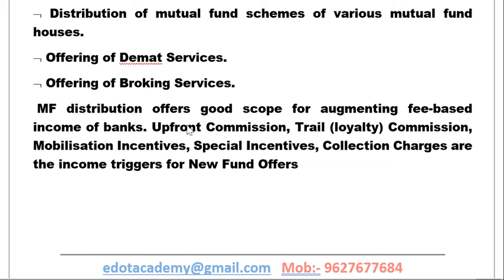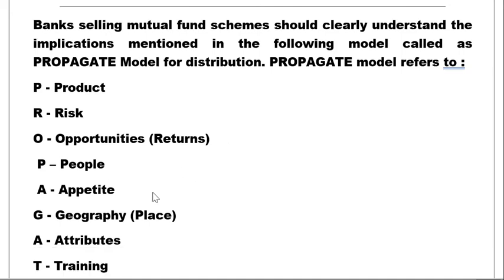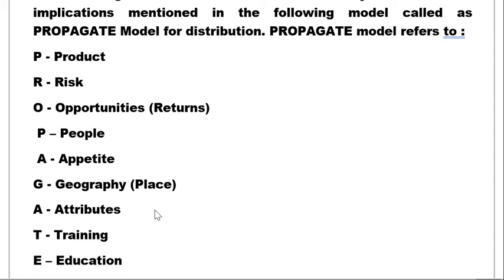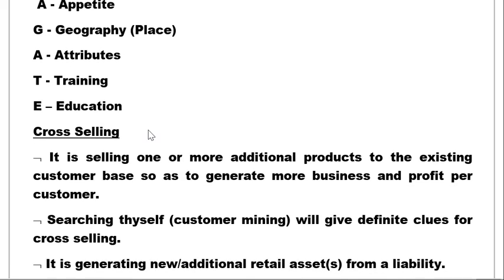Mutual fund distribution is offering very good income for banks, including during new fund offerings. When banks sell mutual fund schemes to customers, they should understand the PROPAGATE model of distribution. This model covers: Product, Risk, Opportunity of return, People, Appetite (purchase appetite for the product), Geography (location of the bank), Attributes of the product, and Training — because you have to educate customers.